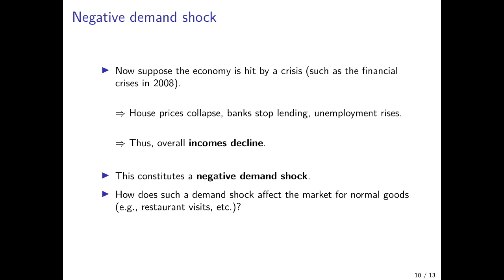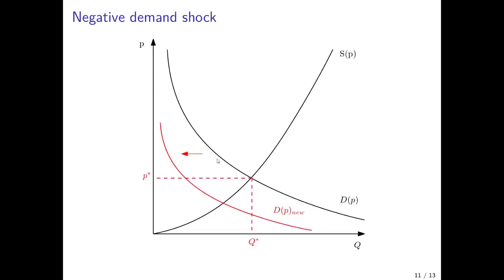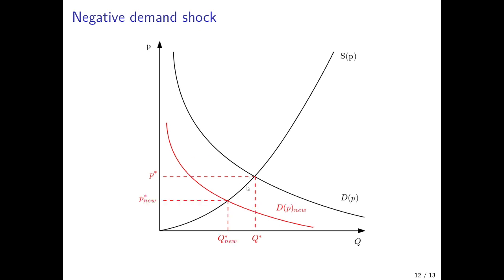How does such a negative demand shock affect the market for a normal good — again, let's assume restaurant visits? The demand curve would shift to the left or inwards, because households have a lower income level and at a given price can only afford fewer of the good. If the market price stayed constant, there would be huge excess supply. From the video on market equilibrium, we know excess supply leads to downward pressure on the price level. So we move along the supply curve downwards to the new market equilibrium at a new lower price level and a new lower quantity.